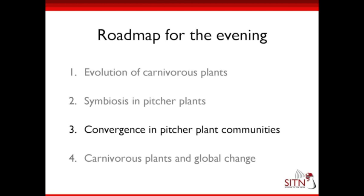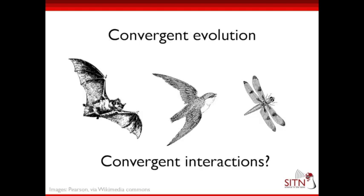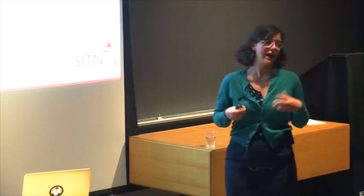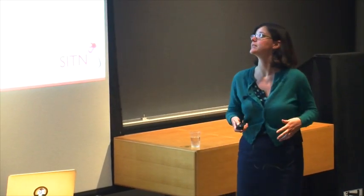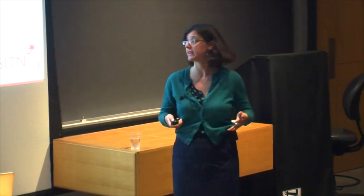Now I'm going to talk about some of my research looking into convergence in pitcher plant communities. Remember convergent evolution — wings in birds, bats, and insects that evolved separately. We see this pattern in nature, but I also want to talk about convergent interactions: can you have convergent interactions between different species appearing in different parts of the world in unrelated situations?